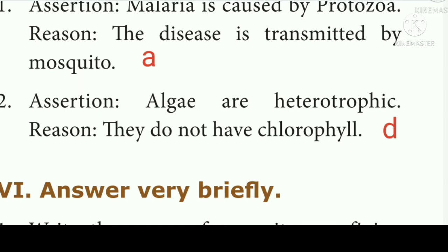Question 2: Assertion: Algae are heterotrophic. Reason: They do not have chlorophyll. Answer D: Both assertion and reason are false.